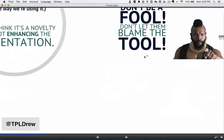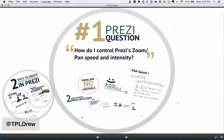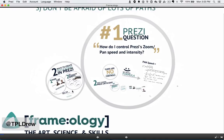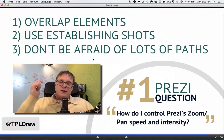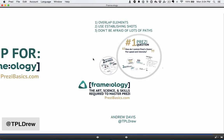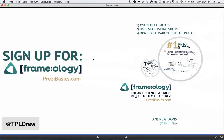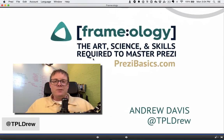So that's the concept overall. Let's take a look at the big arc here. The Prezi question was: how do I control Prezi zoom, pan, speed, and intensity? The answer is there's no control. I want you to overlap elements, use establishing shots, and don't be afraid of lots of paths — those are going to make your use of Prezi really effective. This is another great episode of Framology — the art, science, and skills required to master Prezi. You can find more at PreziBasics.com, and you can sign up for Framology, my new class coming out this year, at prezibasics.com. If you want the other 10 tips, I'll email those to you if you sign up for Framology there. Thanks so much — I'm Andrew Davis.